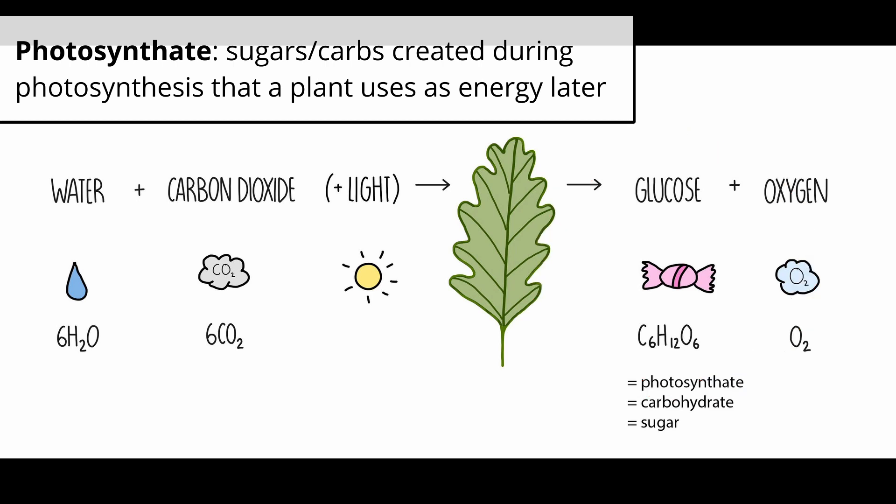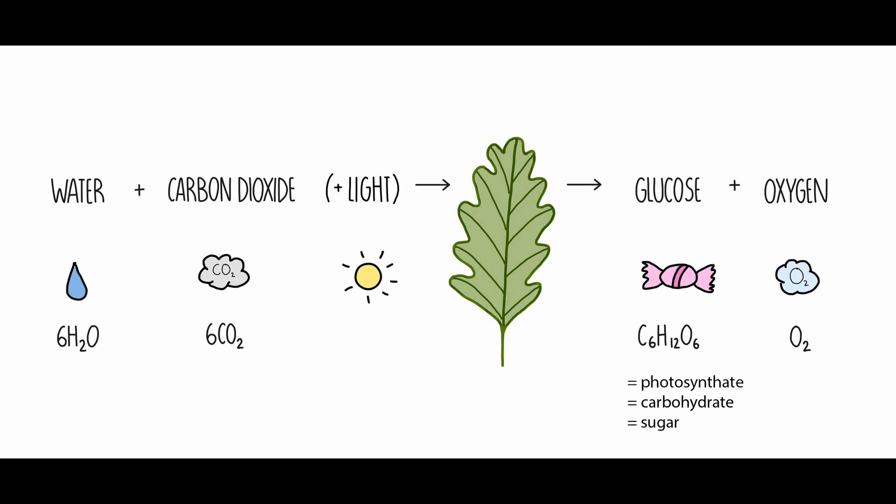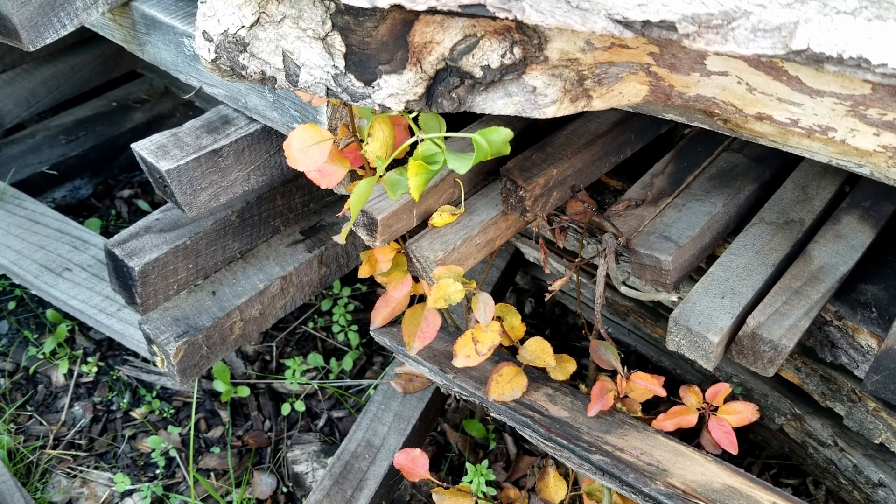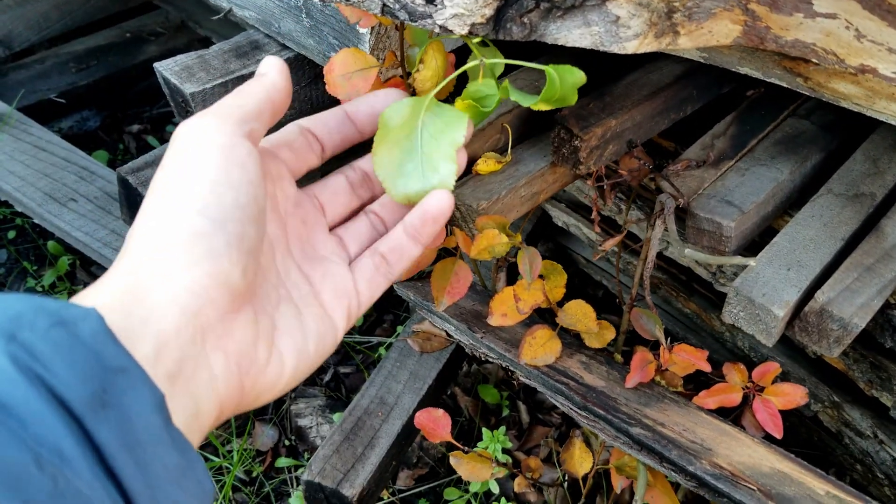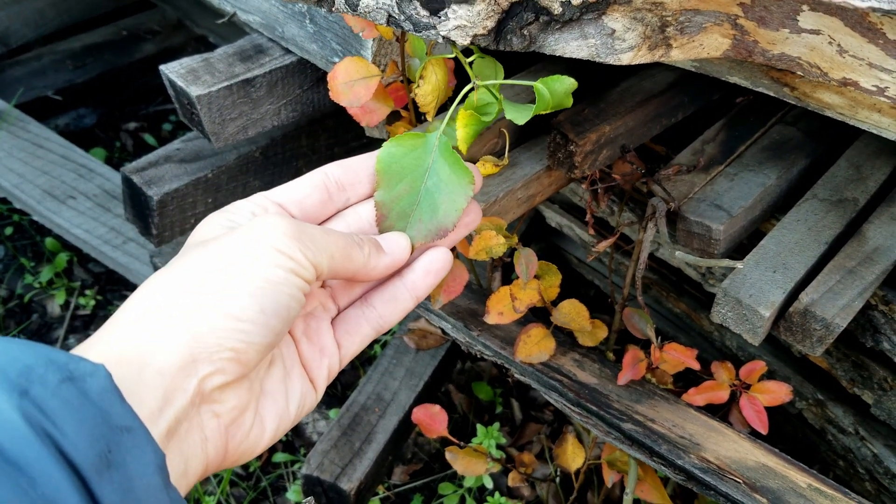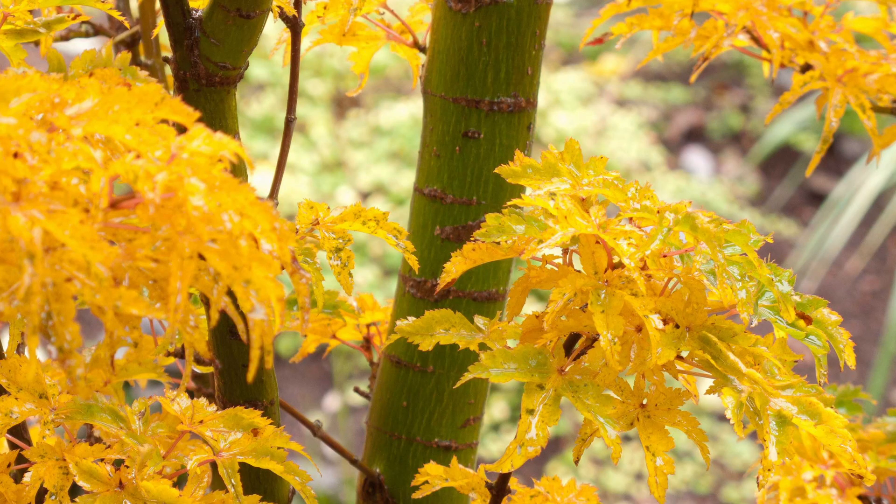Photosynthate is simply another term for the carbohydrates or the sugars that are produced during photosynthesis and used in other processes like respiration. Photosynthesis largely happens in leaves which have an abundance of pigments, but it can also happen in green stems or under the bark of thin barked trees like birches.